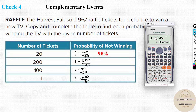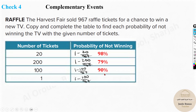With 1 ticket out of 967, it's basically a 99.9% chance of not winning. You can see that as you have fewer tickets, the chances of not winning are very high. With 200 tickets, there's about a 78% chance of not winning — so that gives the highest probability of winning among these options. That's how we solve this problem, and that's the end of this lesson.